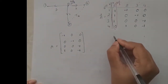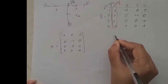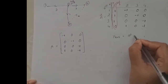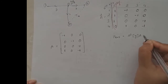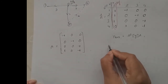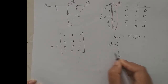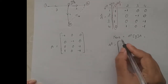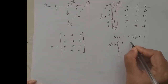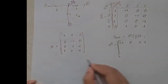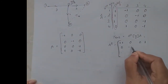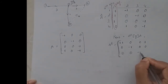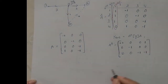For the formation of Y-bus using the singular transformation method, the formula is: Y-bus equals A-transpose times Y times A. We have matrix A, so A-transpose is formed by taking columns of A as rows. The first row of A-transpose corresponds to the first column of A, second row to the second column, and third row to the third column.